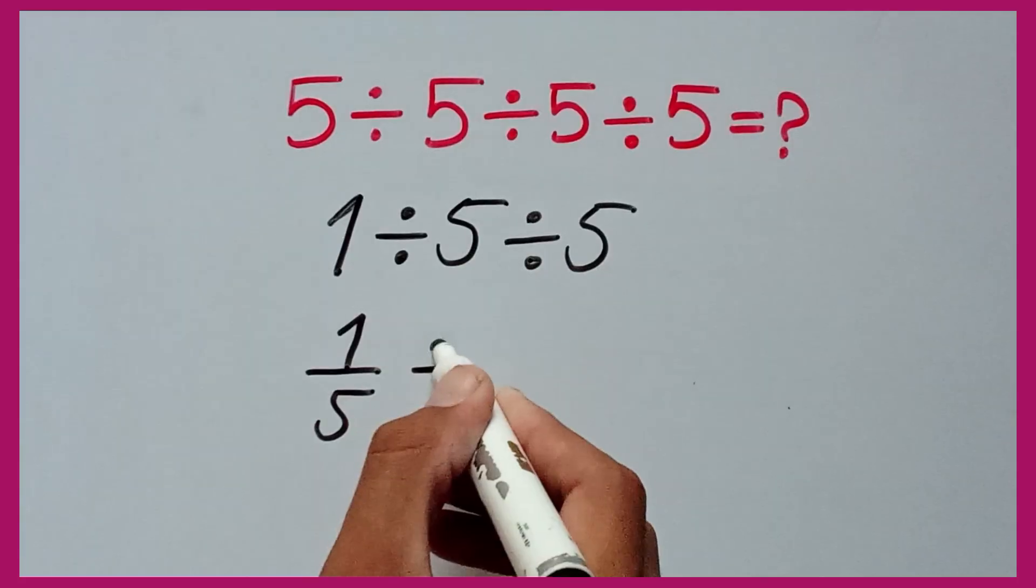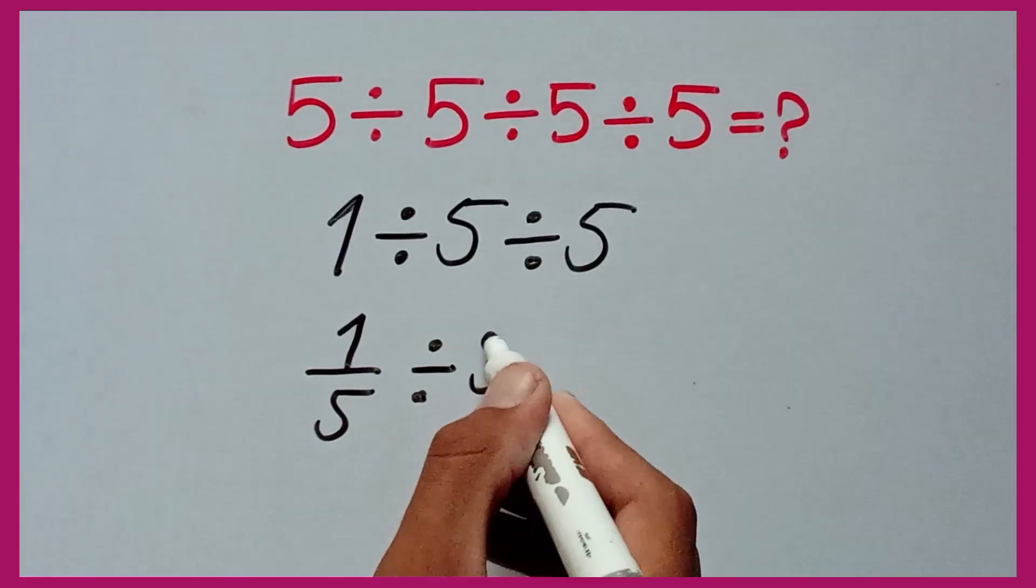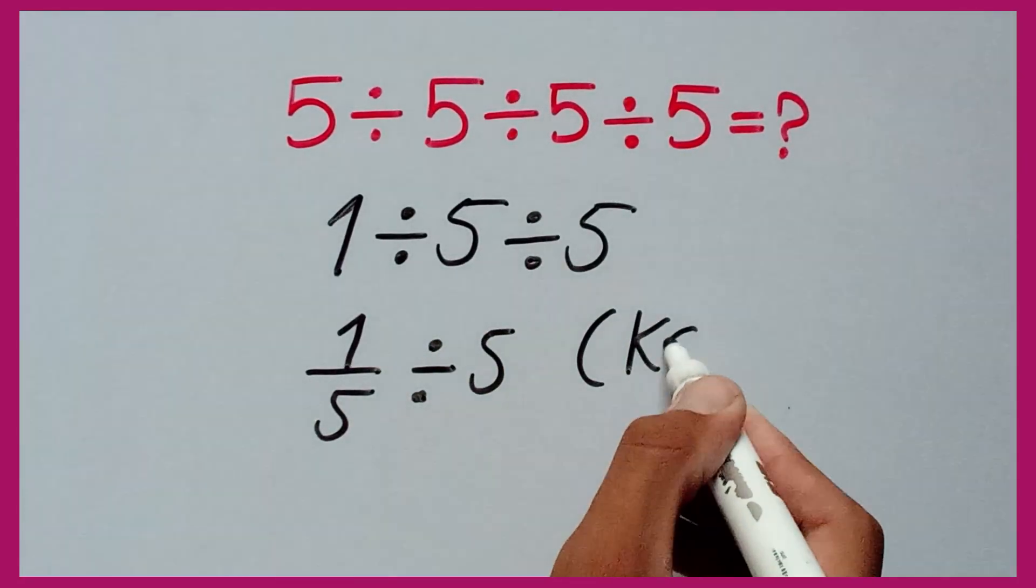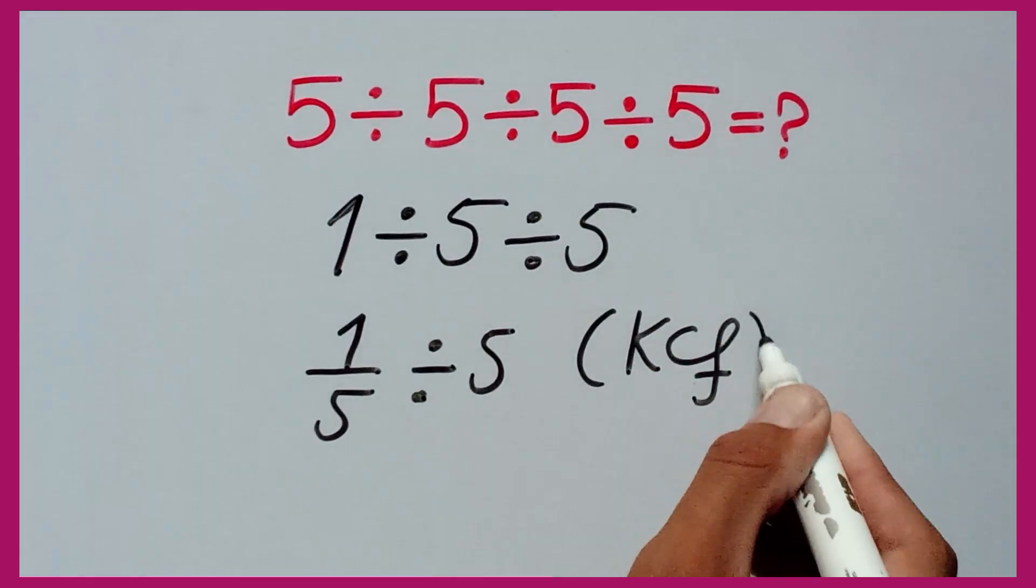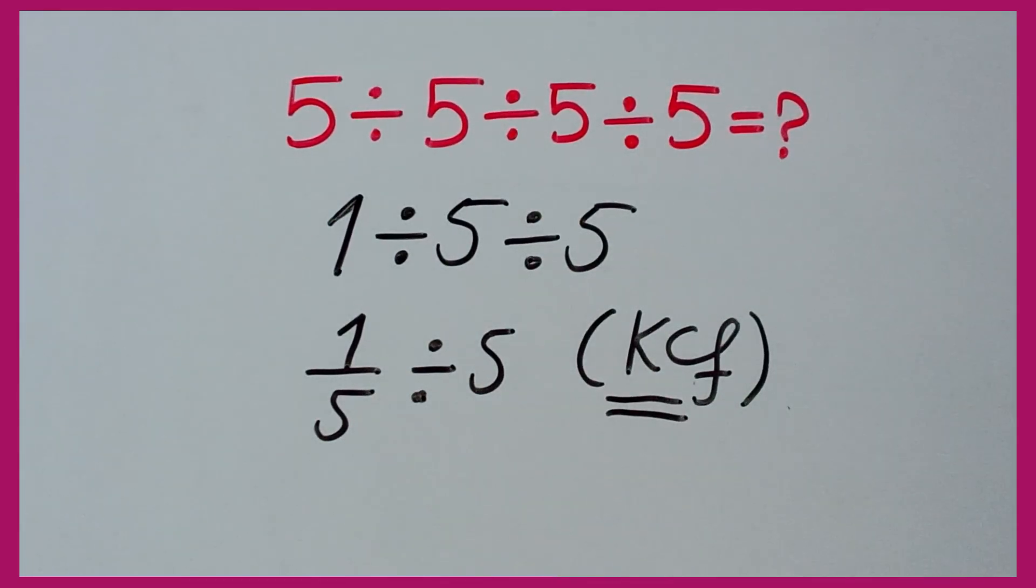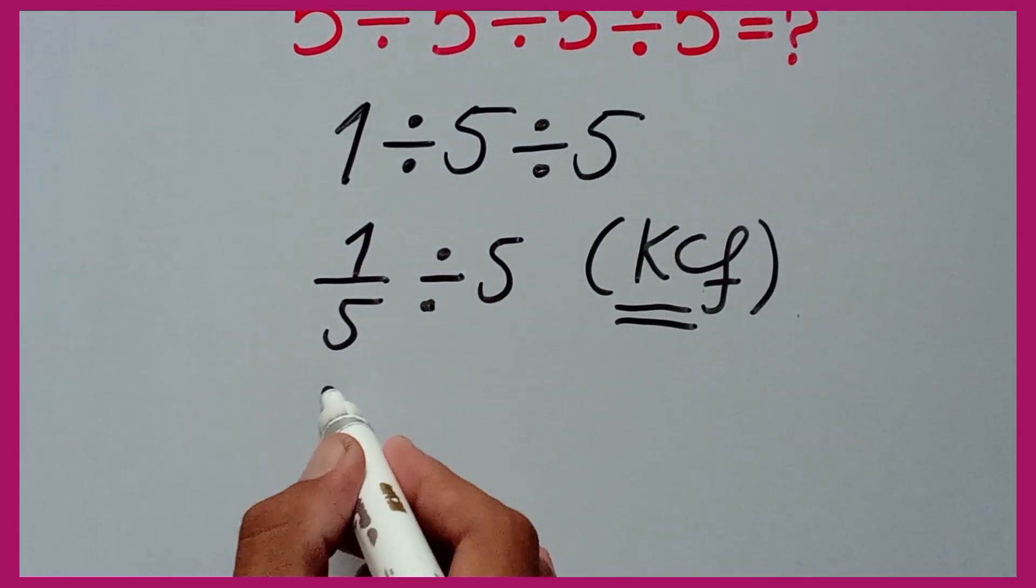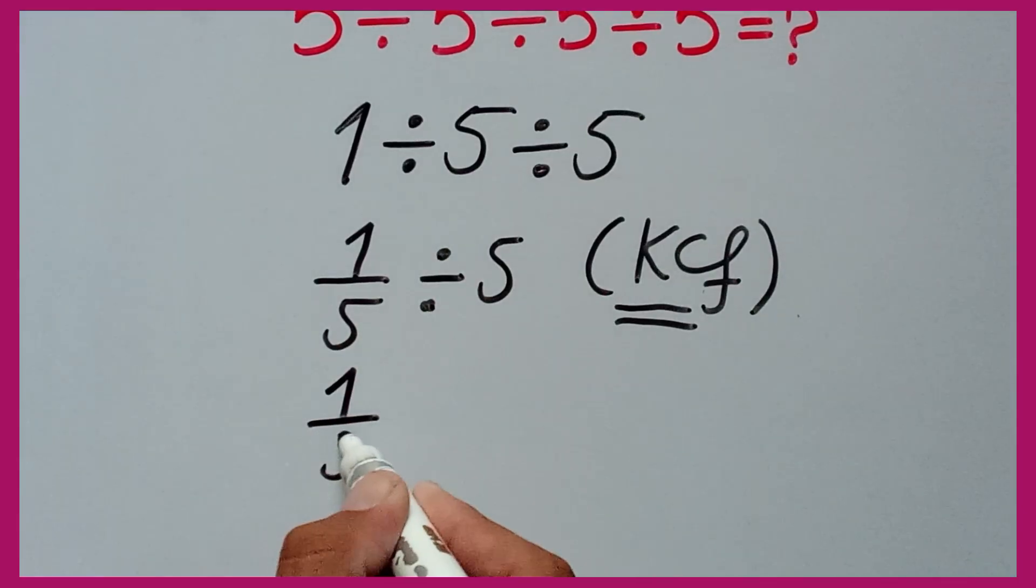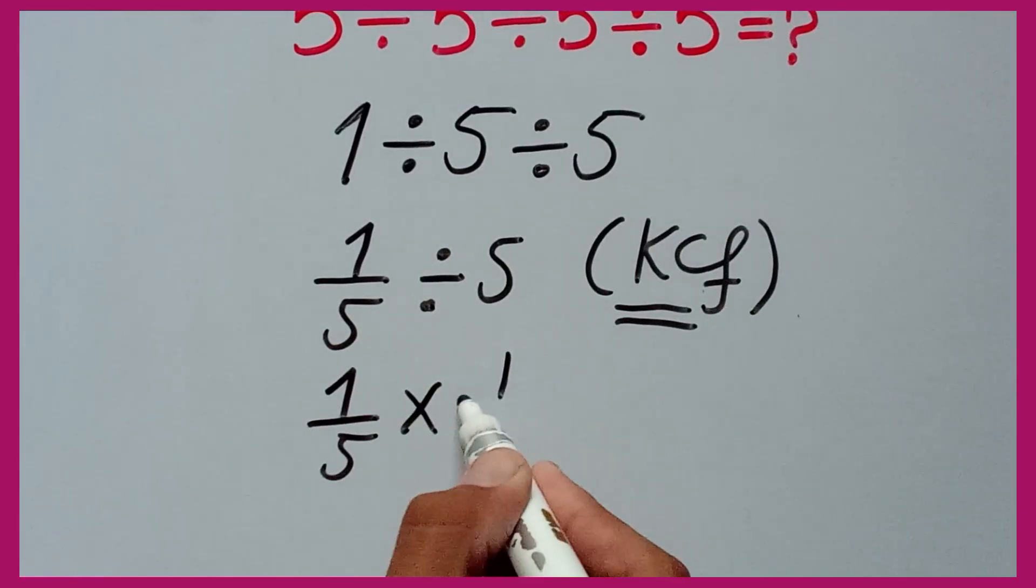Divided by 5 I can write as is. Now according to the rule of KCF—keep, change, flip—we can write this as 1 over 5 multiplied by 1 over 5.